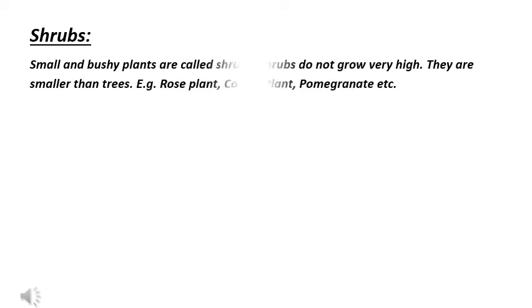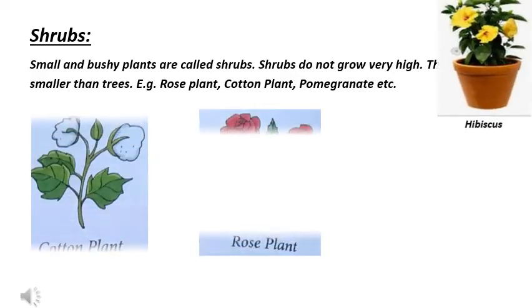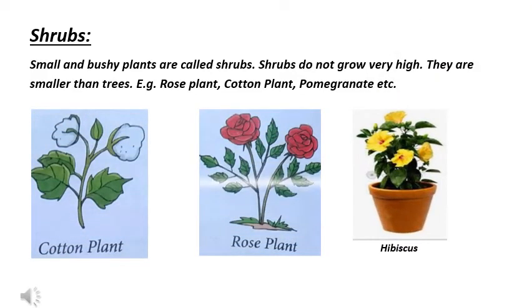The next type of plants is shrubs. Small and bushy plants are called shrubs. Shrubs do not grow very high. They are smaller than trees. For example, rose plant, cotton plant, pomegranate, etc.